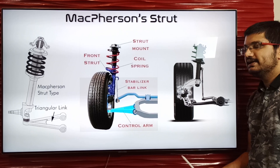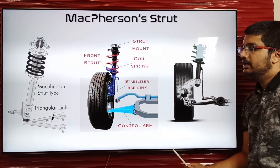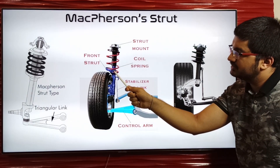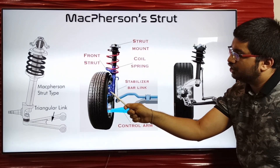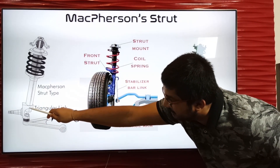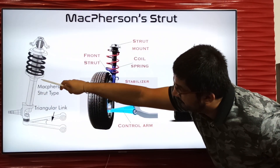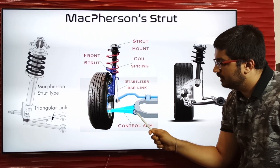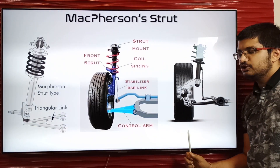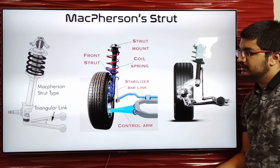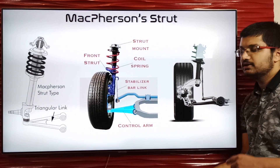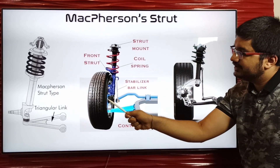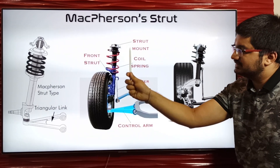The first type we will look at is the McPherson strut suspension. In this system, there is a strut — a unit combining a coil spring and damper — connected directly to the top of the knuckle. To the bottom of the knuckle, a control arm is mounted, which is connected to the frame on the other side using two pivots. This geometry is the most common in passenger vehicles because it is very compact and easy to manufacture. One thing to note is that during steering, the strut must rotate about its axis — the steering axis.